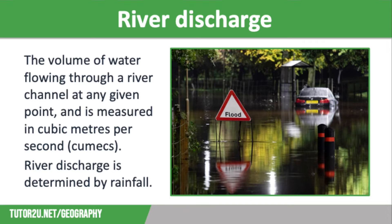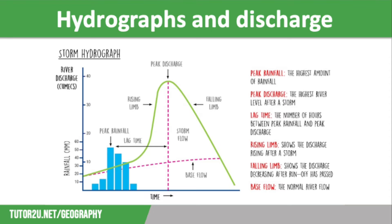River discharge is determined by rainfall and this relationship is shown on a flood hydrograph, which shows how discharge changes after a storm event. On a hydrograph, the horizontal axis shows time in hours or days and the vertical axis shows both rainfall in millimetres and discharge in cumecs.